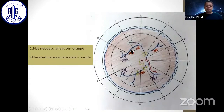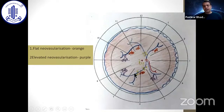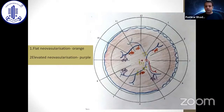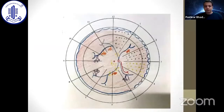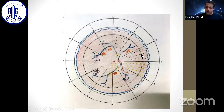Flat neovascularization should be represented by orange color and elevated neovascularization by purple color. Drusen, hard exudates, and cotton-wool spots should be represented by yellow color. If there are too many drusen, cotton-wool spots, or hard exudates, we can label them with C or D to indicate cotton-wool spot or drusen. In retinitis pigmentosa, RP changes can be represented by black dots. Old scars and old laser marks should be represented by black dots, while fresh laser marks should be represented by yellow dots.